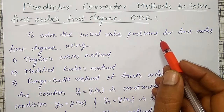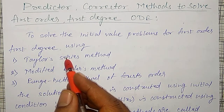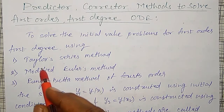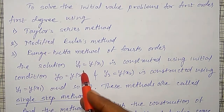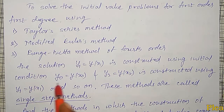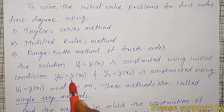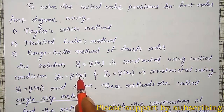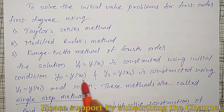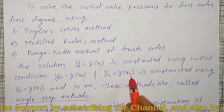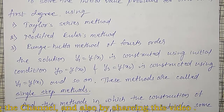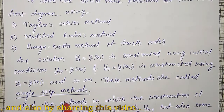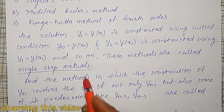To solve initial value problems for first order, first degree ordinary differential equations, we have used Taylor series method, modified Euler's method, and Runge-Kutta fourth order methods. The solution of y1, that is y of x1, is constructed using only the initial condition y0 — that is y at x equal to x0 — one previous value to find y1. Similarly, y2 is constructed using only y of x1, the single previous value. These methods are known as single step methods.